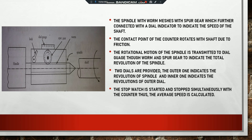The stopwatch is started and stopped simultaneously with the counter to calculate average speed. For example, if you start the stopwatch for one minute and the dial gauge shows 60 revolutions, that is 60 RPM. If the dial gauge shows 90 and the stopwatch was stopped after one minute, the result is 90 revolutions per minute.